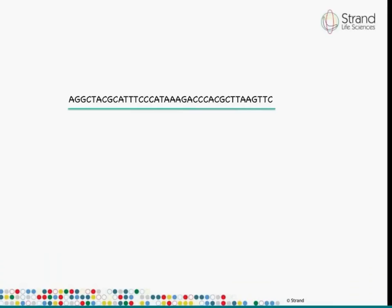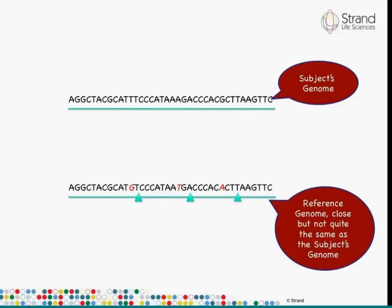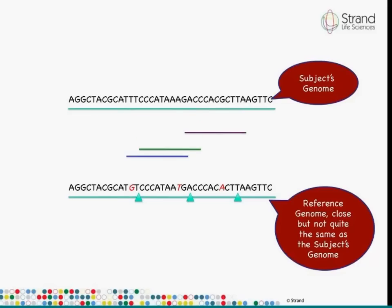Let's start with what is an alignment algorithm — a very quick one-slide introduction. You have the genome that you are sequencing, the subject's genome, and you have the reference genome, which is quite close but not quite the same as the subject's genome. You're drawing reads from the subject's genome. By the time those reads come out of the sequencer, you've lost the association between the reads and the subject sequence, so all you have is a set of reads sitting in a file.